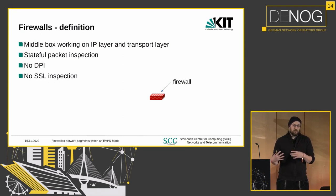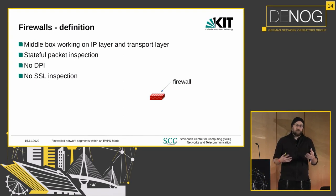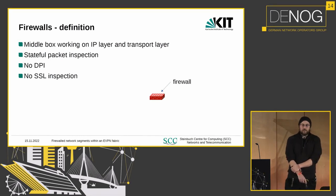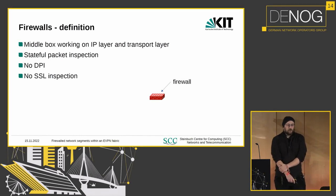Firewalls do one special thing: they do stateful filtering. They track connections. So if answer packets come in and there was an original packet seen, they let through the answers.